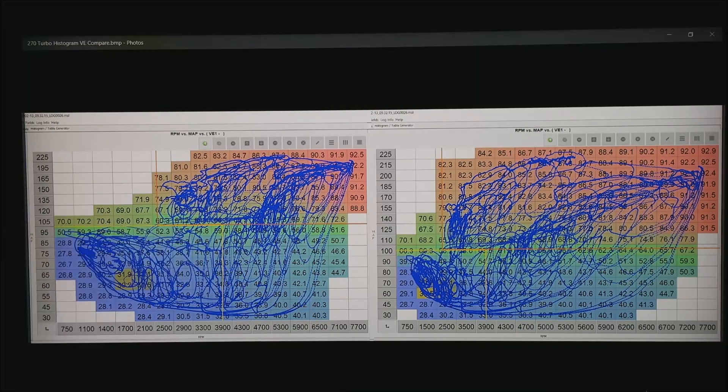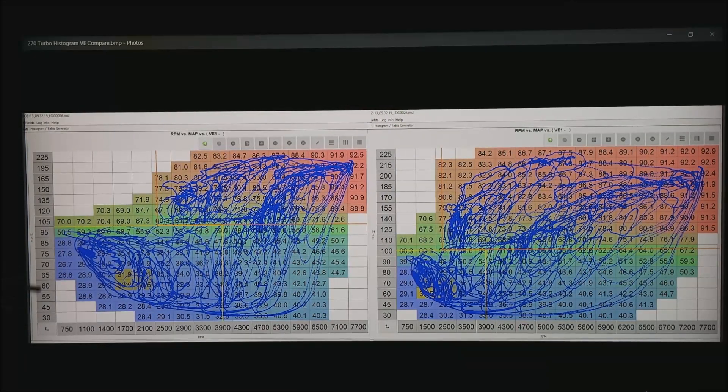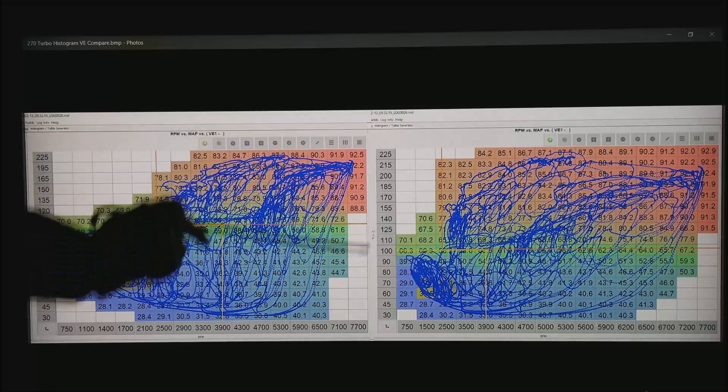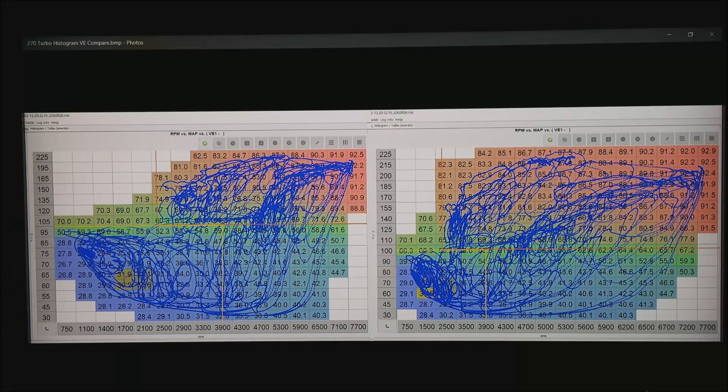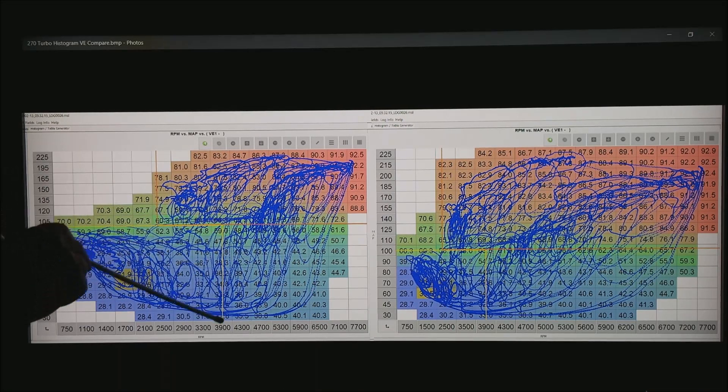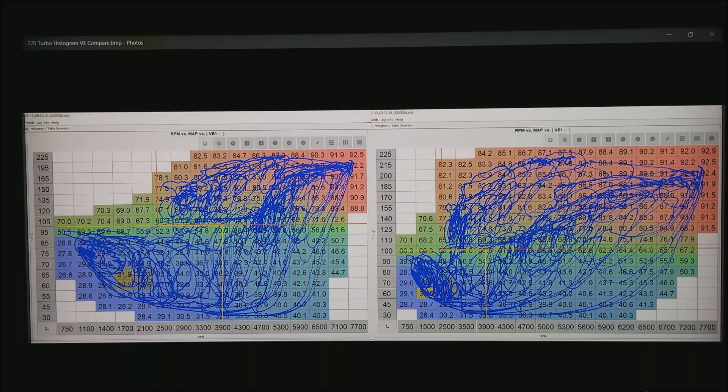Notice it runs from 750 to 7,700 on both plots. It also runs from 30 kPa up to 225. All I've done is changed how the numbers progress from bottom to top or left to right. In the yellow is where you would be in the relatively low horsepower range. In the top right, above and to the right of the red is where you have the power.